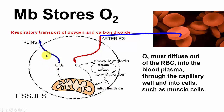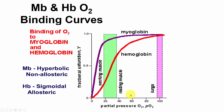CO2 is a byproduct that travels in the veins back to the lungs and is exhaled. O2 must diffuse out of the red blood cell, into the blood plasma, through the capillary wall, and into cells such as muscle cells that need a lot of oxygen due to their high metabolic rate.